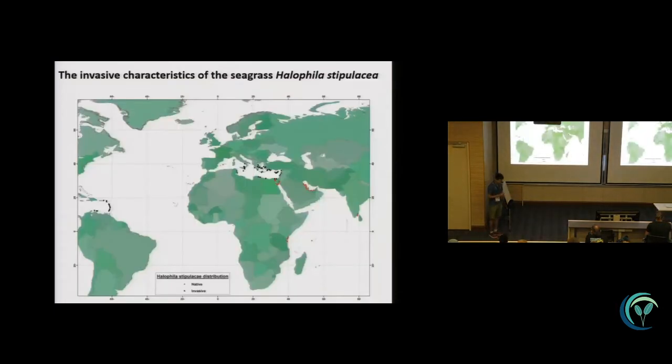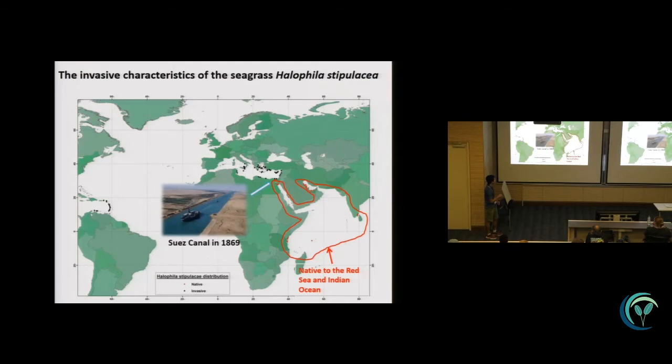Now I want to talk to you about the invasive story of Halophila stipulacea. The Halophila is native to the Red Sea and Indian Ocean. Because of the opening of the Suez Canal, it started invading the Mediterranean Sea.